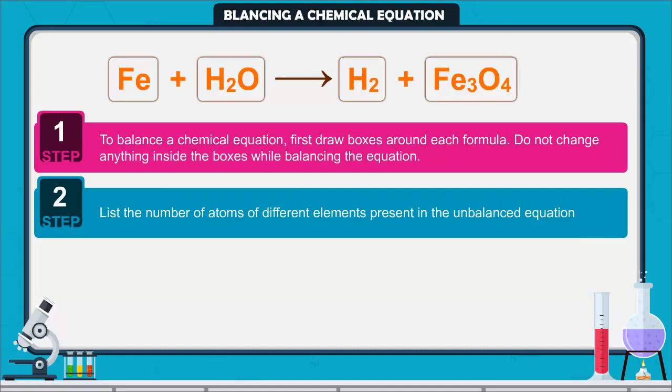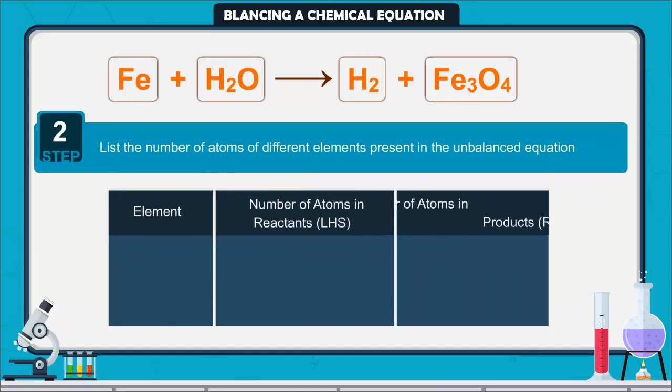Step 2. List the number of atoms of different elements present in the unbalanced equation. Elements we have: iron, hydrogen, and oxygen.